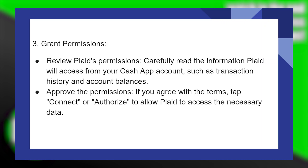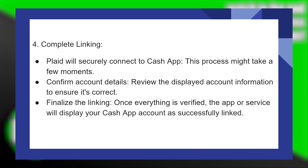If you agree with the terms, tap Connect or Authorize to allow Plaid to access the necessary data. This process might take a few moments. Review the displayed account information to ensure it's correct. Once everything is verified, the app or service will display your Cash App account as successfully linked.